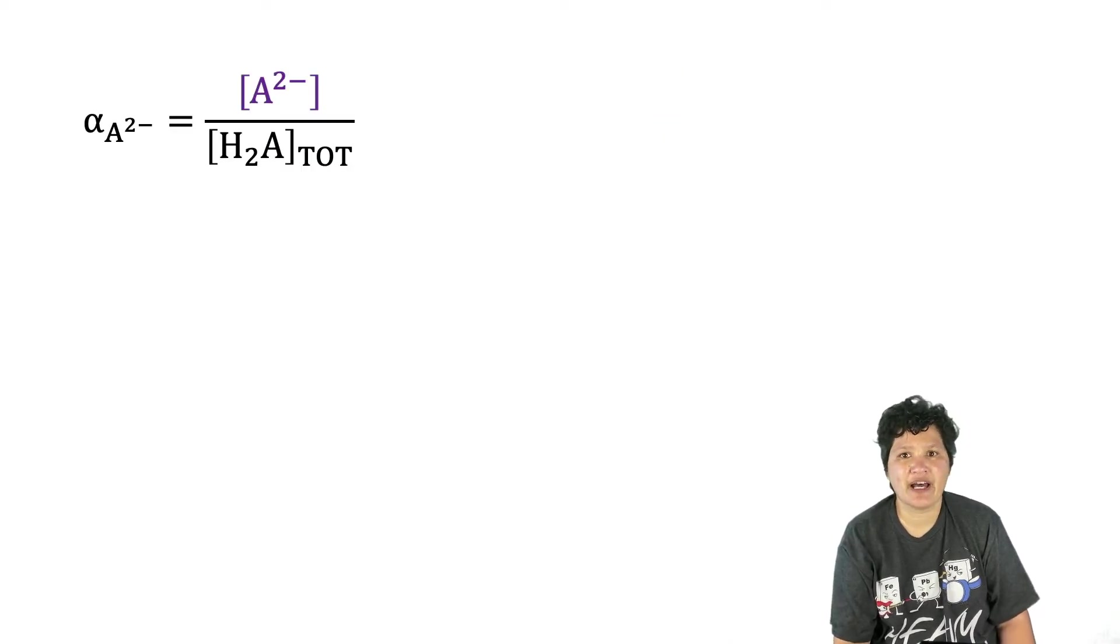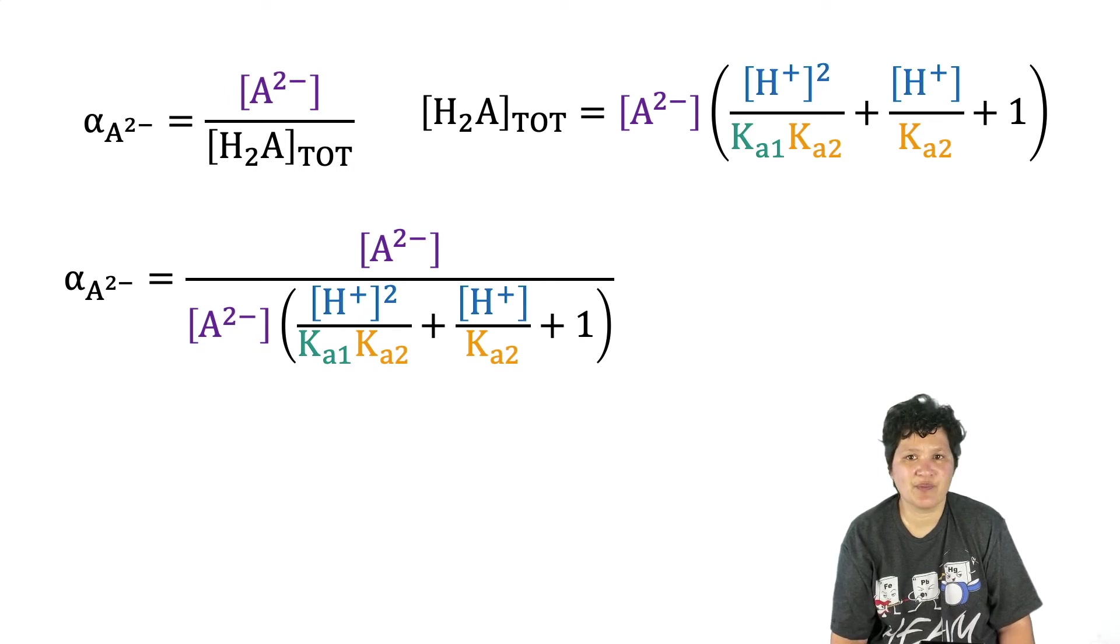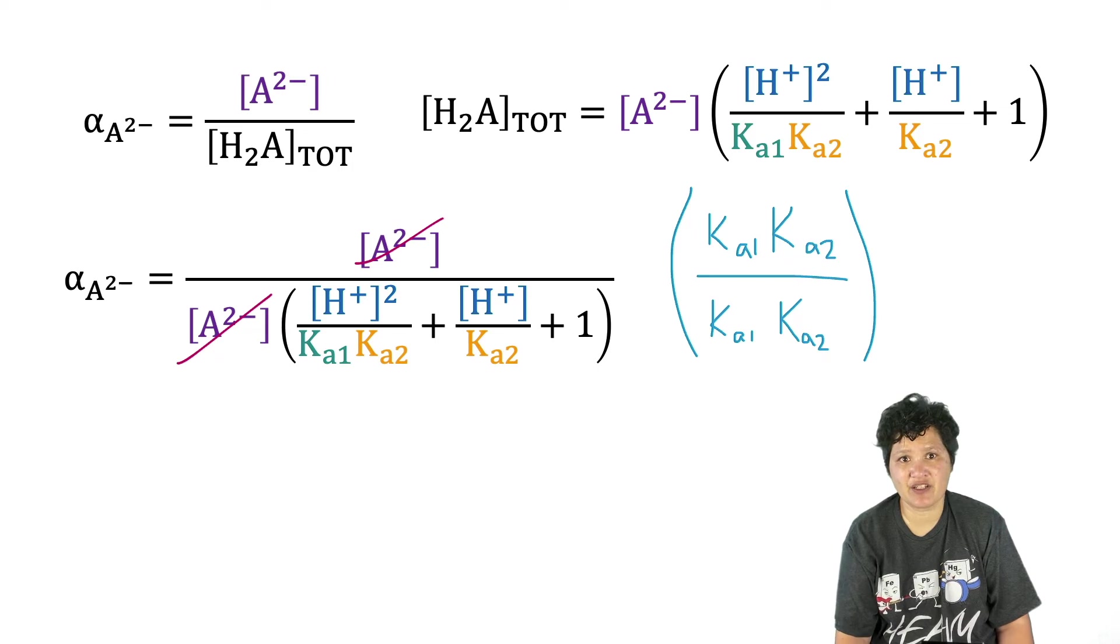And of course we could do similar math for A2 minus. This one is a lot easier because we only have A2 minus on the top, not a whole expression. But we still go ahead and cancel the A2 minus concentrations and get rid of the fraction within a fraction by multiplying top and bottom by Ka1 times Ka2. And we get this.